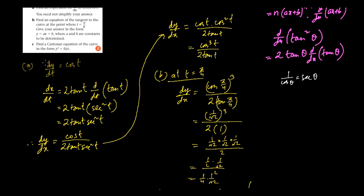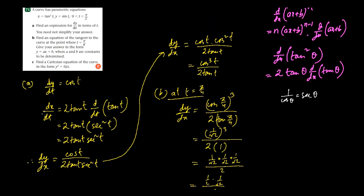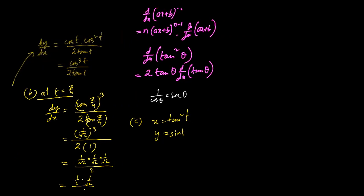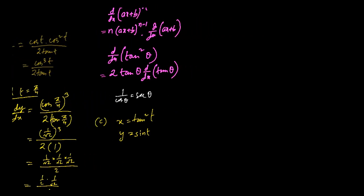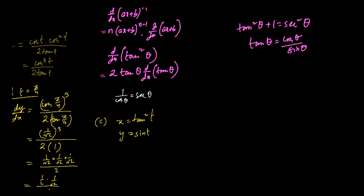The final question is to find the Cartesian equation of the curve. So x = tan² t and y = sin t. We have to convert this to Cartesian format in the form y² = f(x). From the identity tan² θ + 1 = sec² θ, we can connect the two. So we write tan² t + 1 = sec² t.